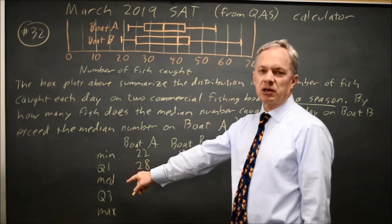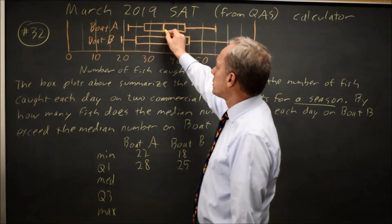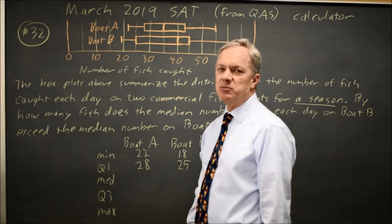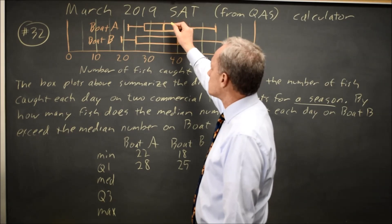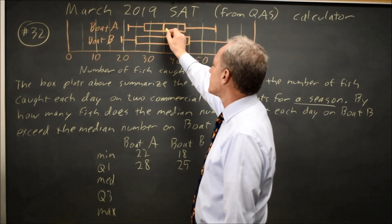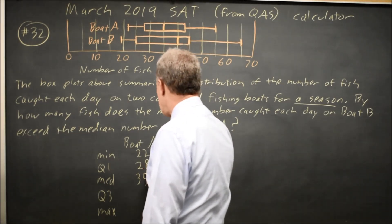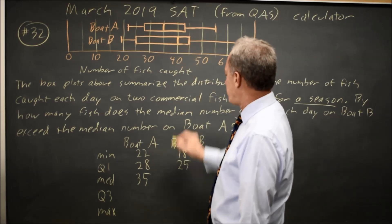The next number in our five number summary, the next point that's indicated on the box plot is this heavy vertical line in the middle of the rectangle. That is the median. That's what they're actually asking about. I just wanted to cover box plots in more detail. Besides, they're fun. So boat A, the median, is exactly 35. And boat B, the median, is this heavy vertical line at 40.